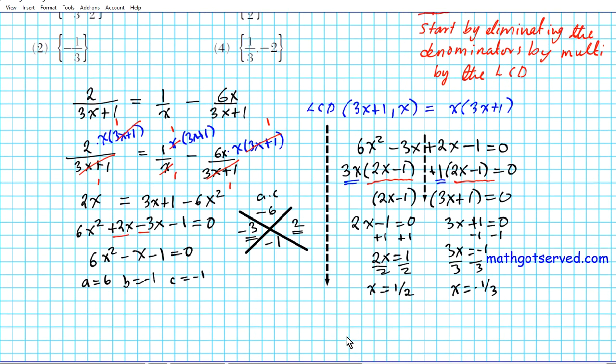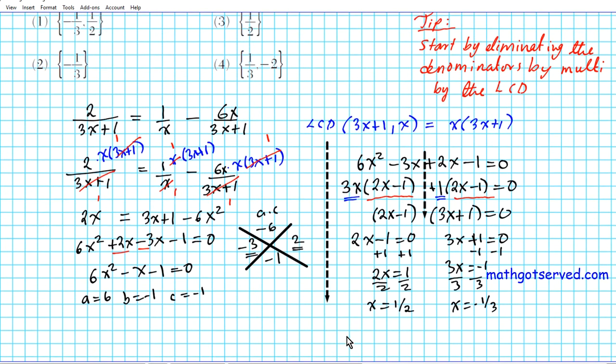So our solutions in set roster notation are 1/2 and negative 1/3. Right? Wrong.